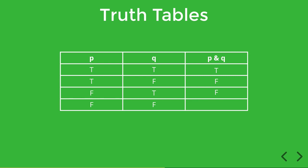And lastly, in row four, we can see that both P and Q are false, so then obviously the conjunction P and Q is going to be false as well.